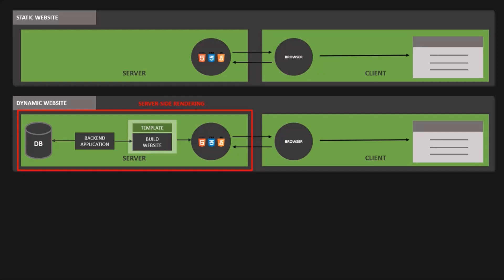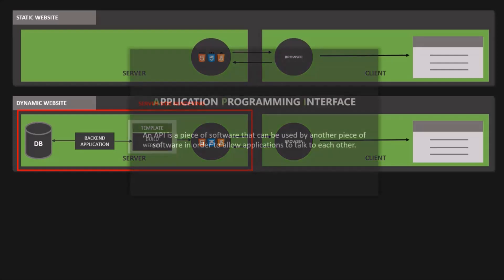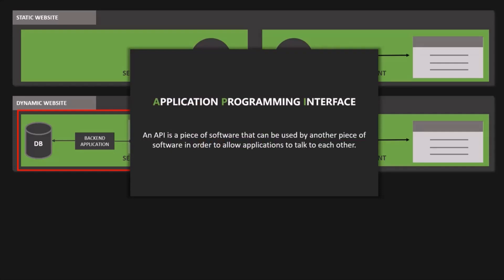Traditionally, static and dynamic websites were the only two types of websites. But in recent years, because of how powerful browsers have become on the client side, we see more and more websites built using web APIs. Let's see how these API-powered websites work and how we can use Node.js to create them. API stands for Application Programming Interface, and on a very high level, an API is a piece of software that can be used by another piece of software in order to allow applications to talk to each other.